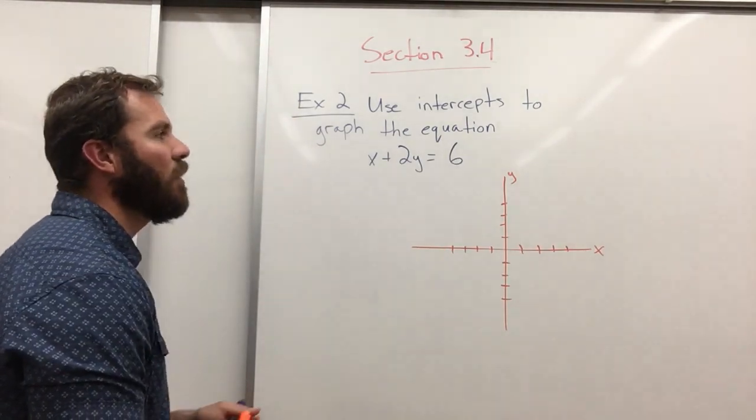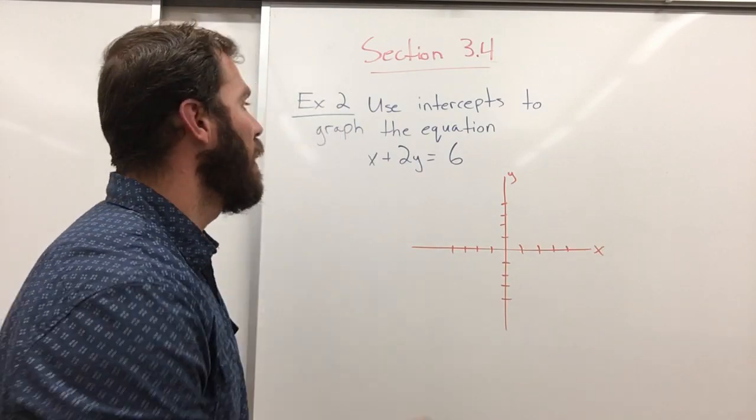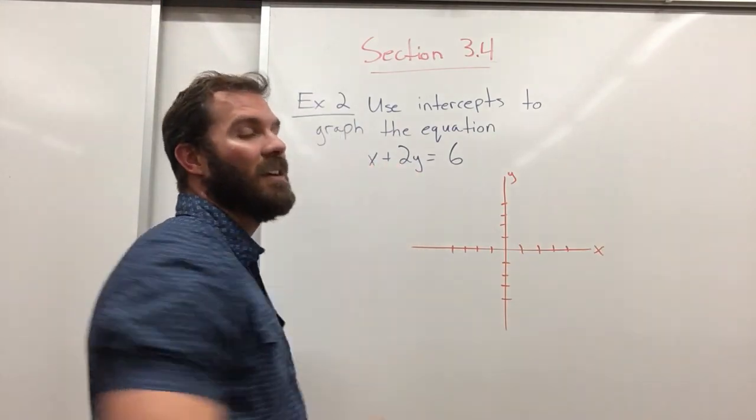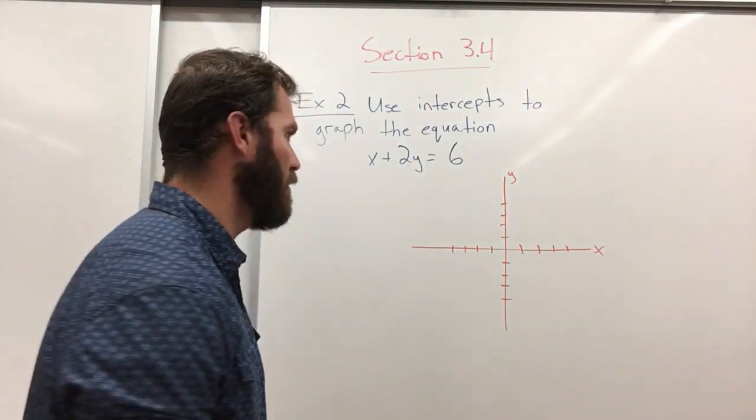To find out where they're going to cross, it's very simple. You just make one of the letters zero and then you solve for the other letter. So let me show you.